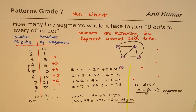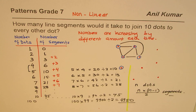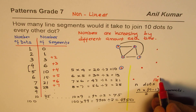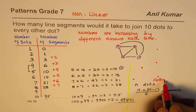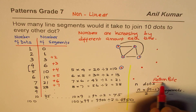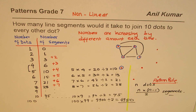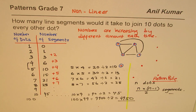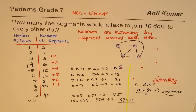The formula is: for n dots, the number of segments is n times (n minus 1), divided by 2. That is how we can get the rule — this is the pattern rule for the given situation. I hope you find it very interesting. You can always share and subscribe. Thank you and all the best.